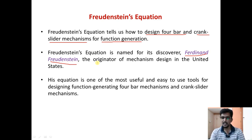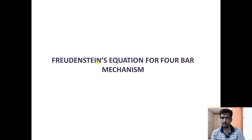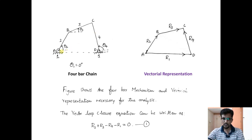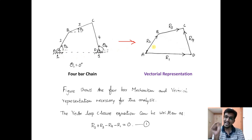We will now derive the Freudenstein equation for a four-bar mechanism. Consider a four-bar mechanism with link one as the fixed link, link two as the crank powered by a motor (the input link), link three as the coupler connecting links two and four, and link four as either a rocker or crank (the output link). The inclination of link two with respect to horizontal is theta2, and the inclination of link four is theta4.